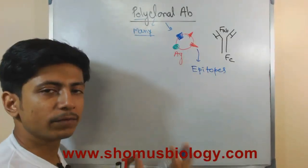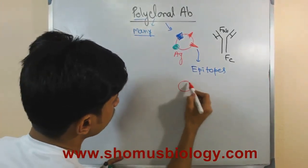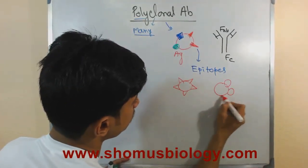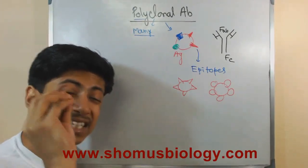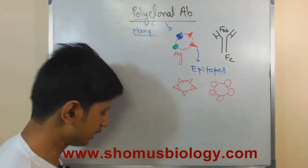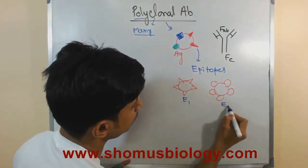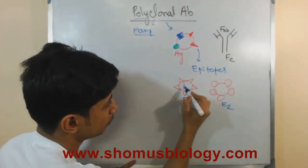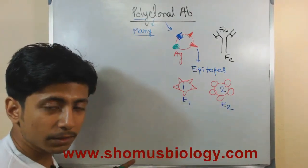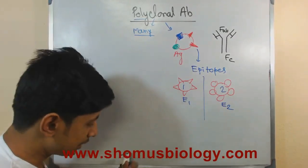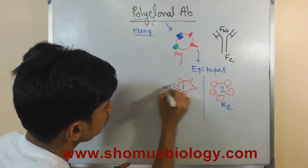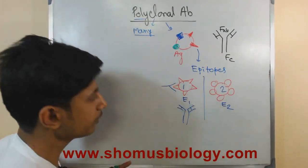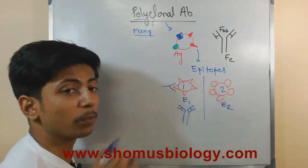These epitopes may vary from one antigen to another. For example, in antigen 1, all epitopes are of the same type — let's call this epitope 1. In antigen 2, the epitopes are different — these are epitope 2. So the antibody that is extremely specific only towards epitope 1 can only interact with antigen 1; it will not interact with antigen 2. It is extremely specific. That antibody will pair with this type of epitope only, not any other type.